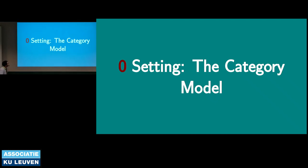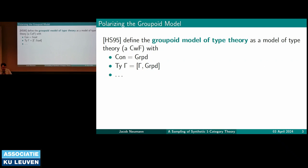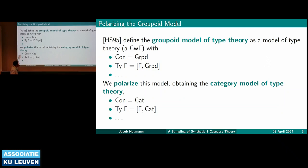The category model is going to be the setting for all this. My usual thing is I love to take the groupoid model and replace the groupoids with categories — and that's what the category model is. The groupoid model, from Hoffman and Streicher, is a model of type theory — I'm going to take that to mean a CWF — where contexts are groupoids and types are indexed families of groupoids. So a type in context Γ is a functor from Γ into the category of groupoids. The category model: just replace all the groupoids with categories.